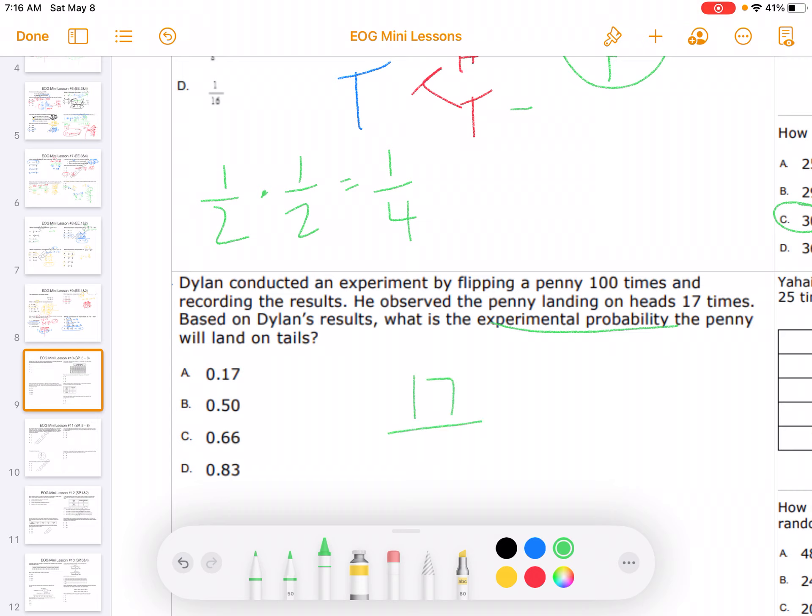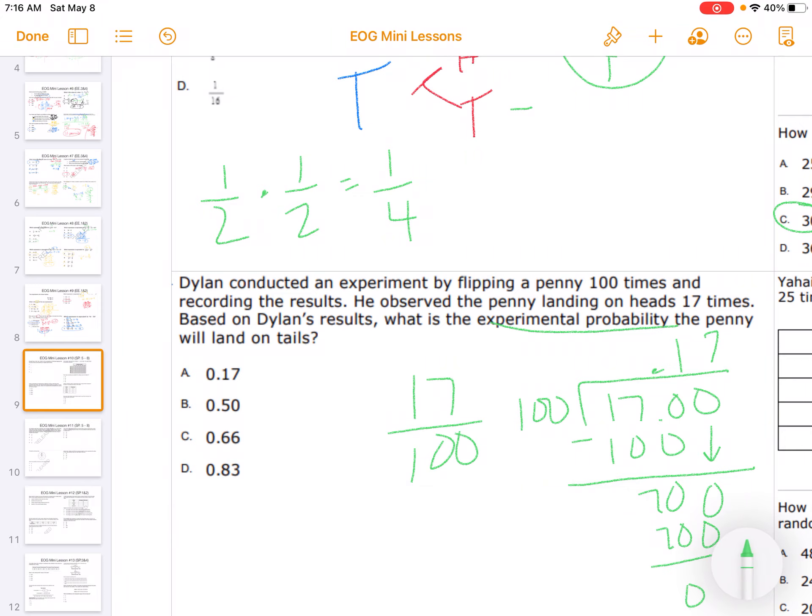Well, 17 out of 100. So in my calculator, or I could do long division, 17 divided by 100. So 100 goes into 17 1 time... 100 goes into 700 seven times with no remainder.